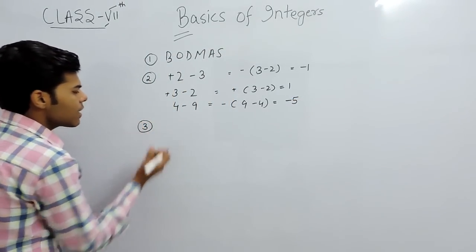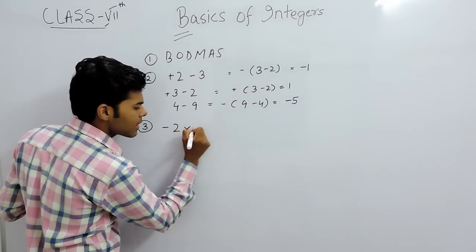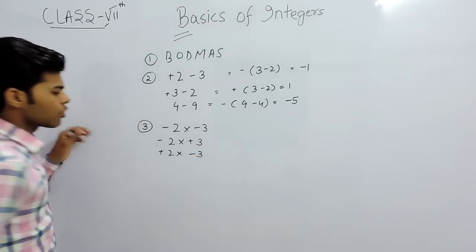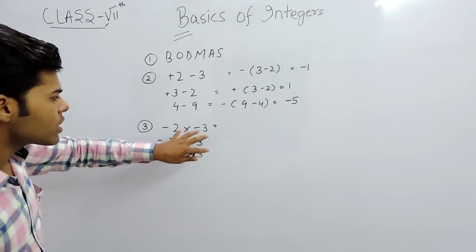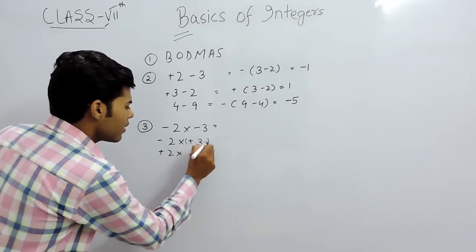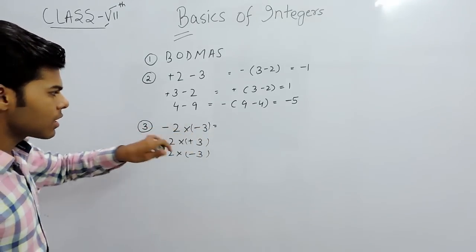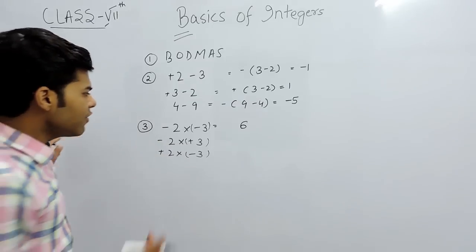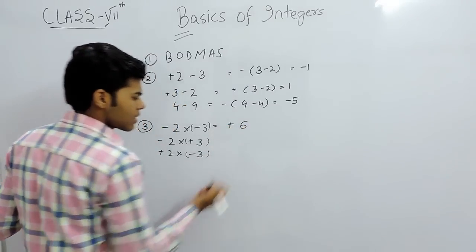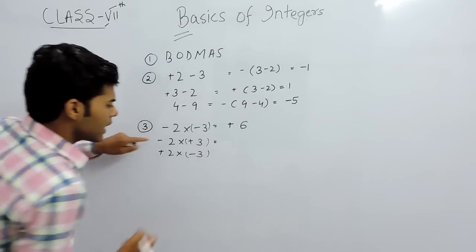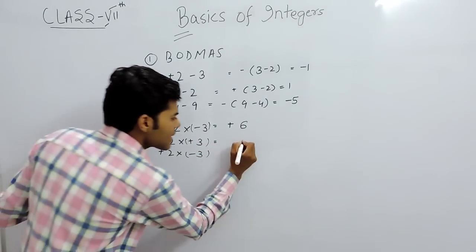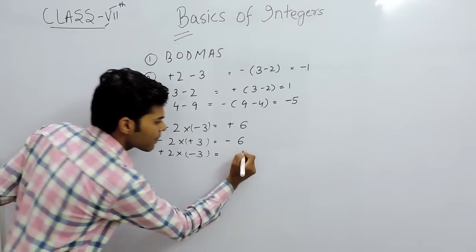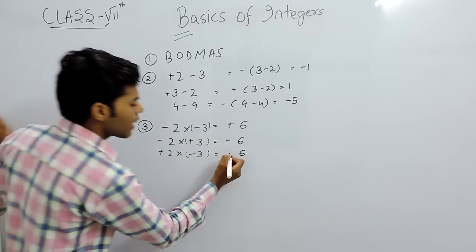For multiplication, consider: minus 2 times minus 3, minus 2 times plus 3, and plus 2 times minus 3. First, multiply the numbers normally — 2 times 3 is 6. Then apply sign rules: minus times minus gives plus, so the result is plus 6. Minus times plus gives minus, so the result is minus 6. Plus times minus also gives minus, so the result is minus 6. And plus times plus gives plus, so plus 2 times plus 3 is plus 6.